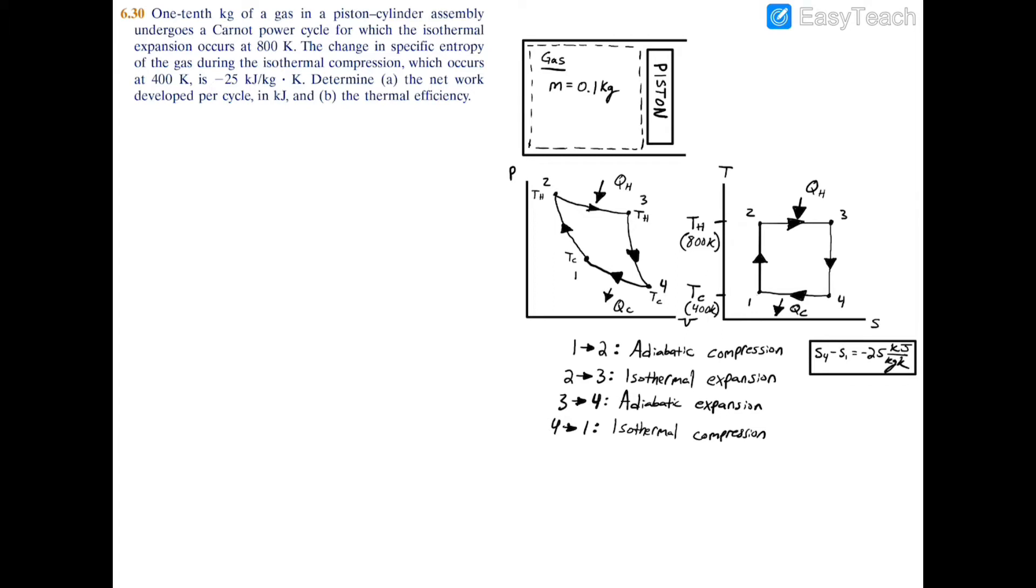We need to find the network in kilojoules and the thermal efficiency. As a refresher, I'll outline the different processes of a Carnot power cycle. For process 1-2, we have adiabatic compression, so we're increasing in pressure and decreasing in volume.